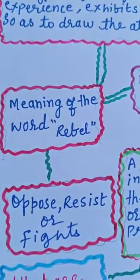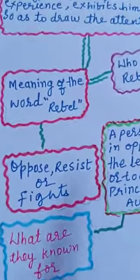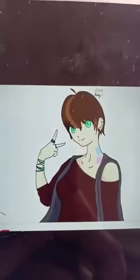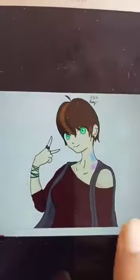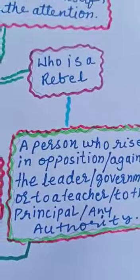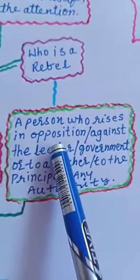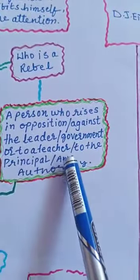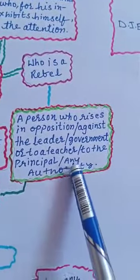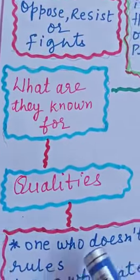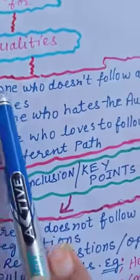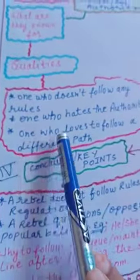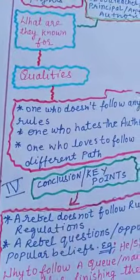What is a rebel? The meaning of the word rebel is: oppose, resist, or fight. Who is a rebel? A person who rises in opposition against a leader, government, teacher, principal, or any authority. Their qualities are: one who doesn't follow any rules, one who hates the authority, and one who loves to follow a different path.